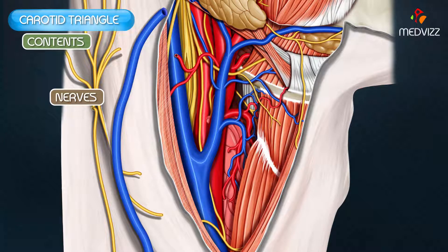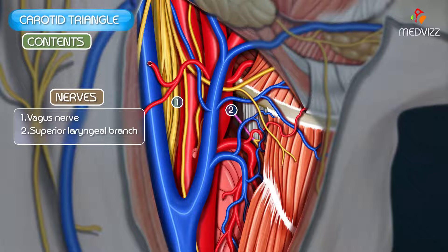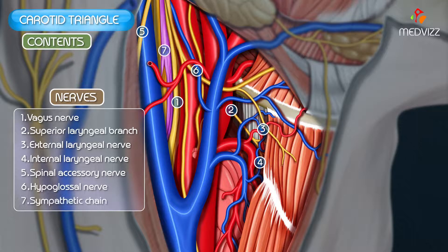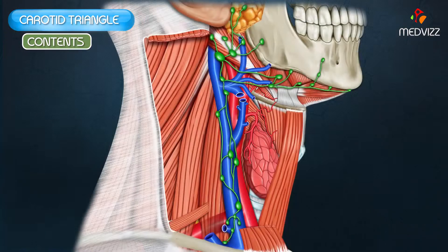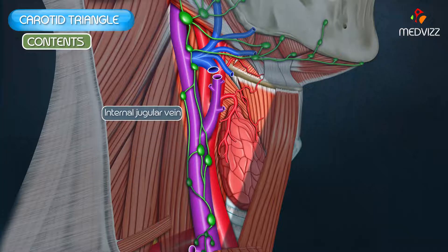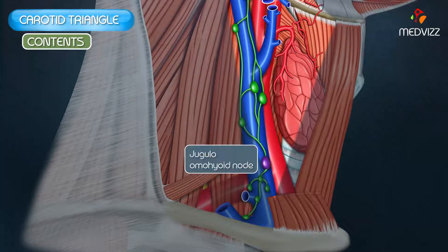The important nerves in the carotid triangle include the vagus nerve, the superior laryngeal branch of the vagus dividing into the external and internal laryngeal nerves, the spinal accessory nerve, the hypoglossal nerve, and the sympathetic chain running vertically downwards posterior to the carotid sheath. The deep cervical lymph nodes are situated along the internal jugular vein, including the jugulo-digastric node and the jugulo-omohyoid node above the inferior belly of the omohyoid muscle.